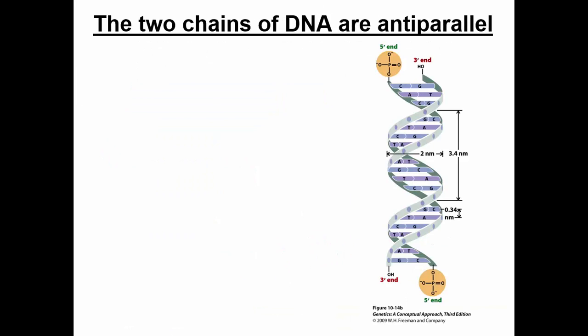We also talked about the dimensions of DNA. DNA is two strands that run anti-parallel — one strand runs in the five to three prime direction, and the other runs in the three to five prime direction. If we look at the diameter of the double helix, the diameter is about two nanometers. One turn of the double helix, in a linear sense, is 3.4 nanometers, which is also 10 base pairs long. You want to know all these different dimensions.